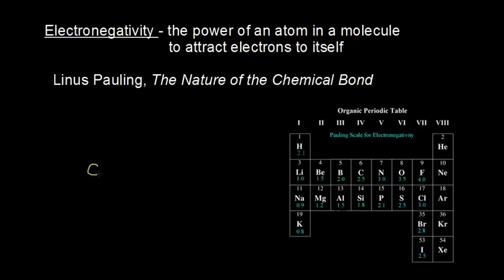If I look at a molecule, I'm going to compare two atoms in that molecule — carbon to oxygen — in terms of electronegativity. To do that, I need to look over here on the right at the organic periodic table, which shows the elements most commonly used in organic chemistry. In blue, it gives us the Pauling scale for electronegativity. Linus Pauling actually calculated electronegativity values for the elements, and that allows us to compare different elements in terms of their electronegativities.